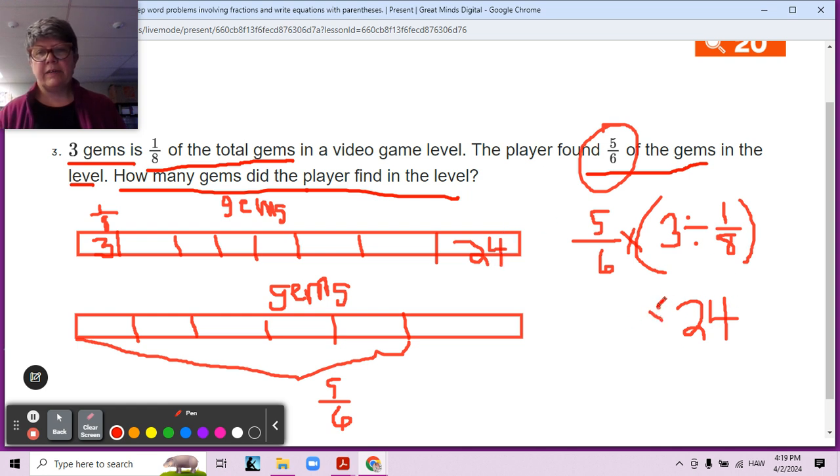Five-sixths of, remember of is the same as multiplying, five-sixths of 24. I guess we have to multiply straight across. Five times 24. Five times four is 20. Two times five is 10, plus two is 12. So that's 120.